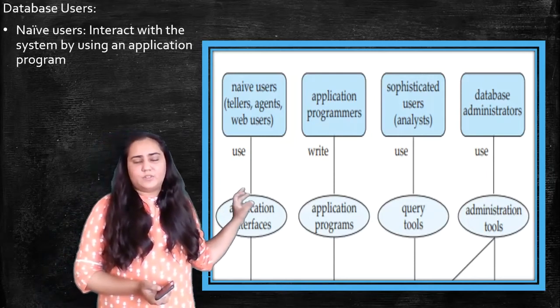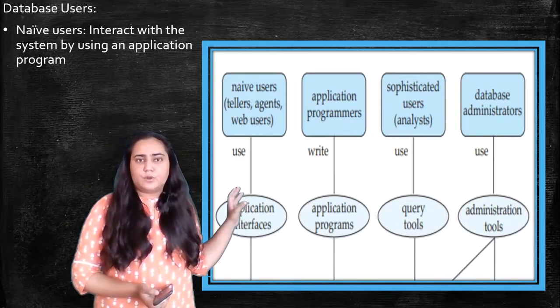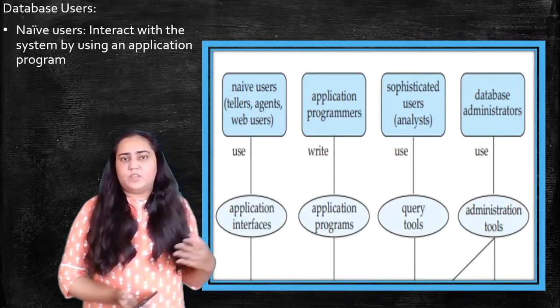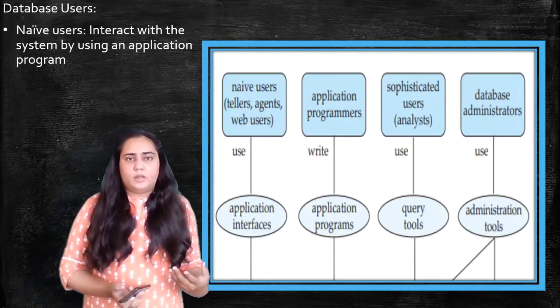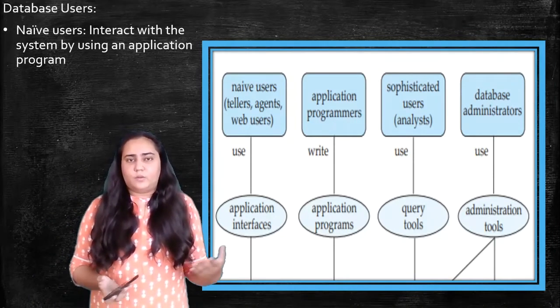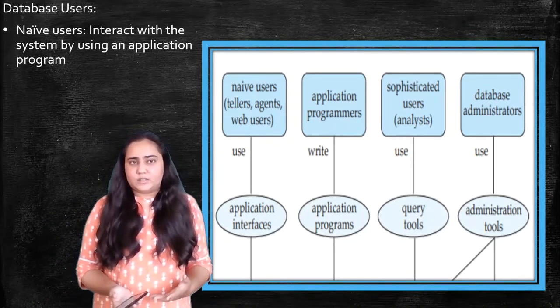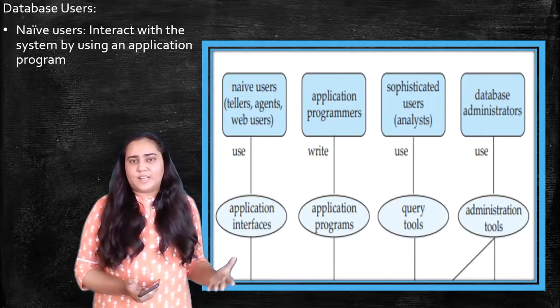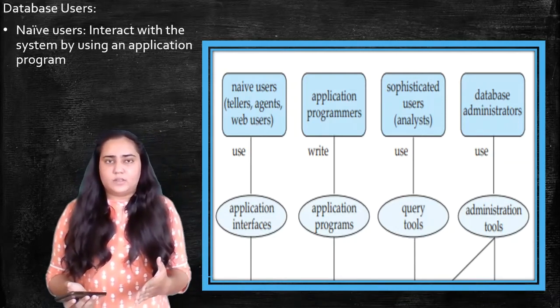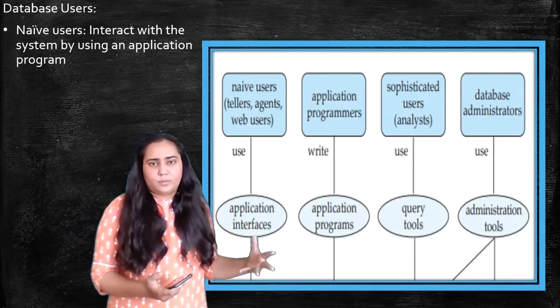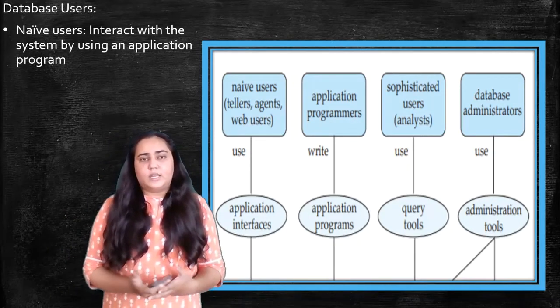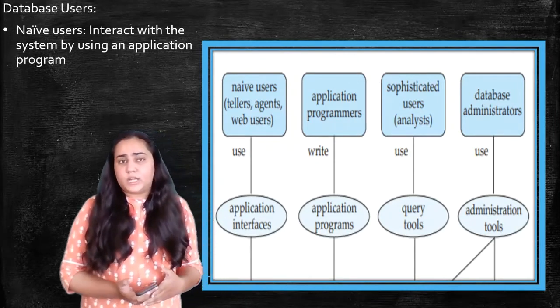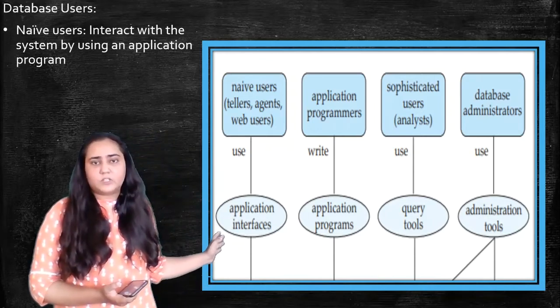So the first type of users we have are called naive users. Okay, so these are all agents and web users and tellers. These are people who do not know anything about databases at all. So these are people like you and me when we are accessing a web application, when we are accessing our results online, or when we are booking flights online, booking movie tickets online. When we are doing all these things, we are naive users, because we do not know how exactly the database is stored.